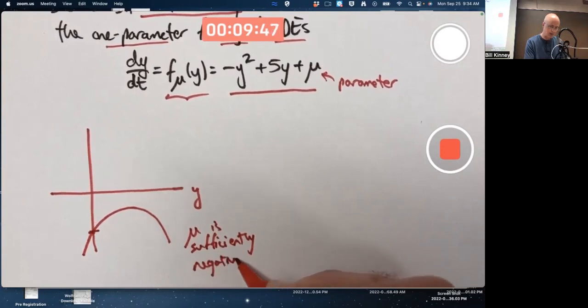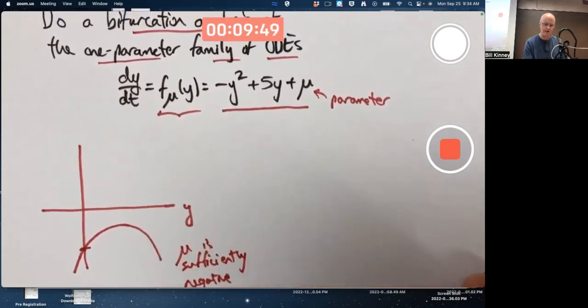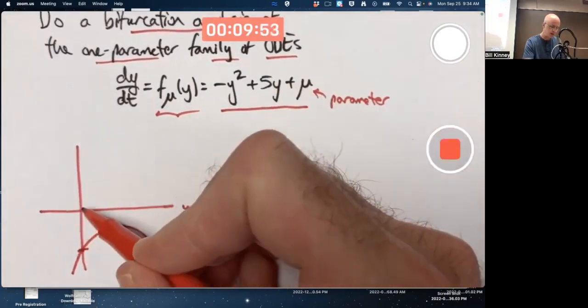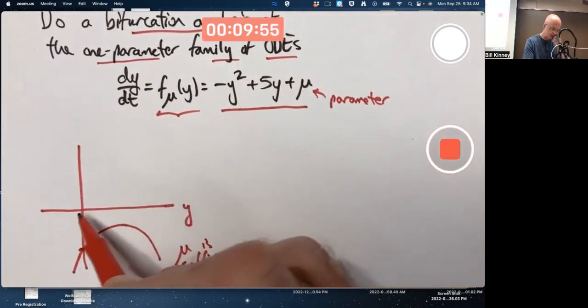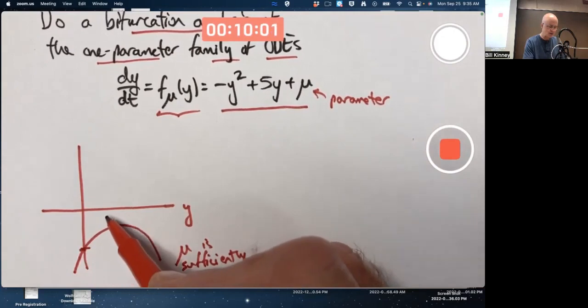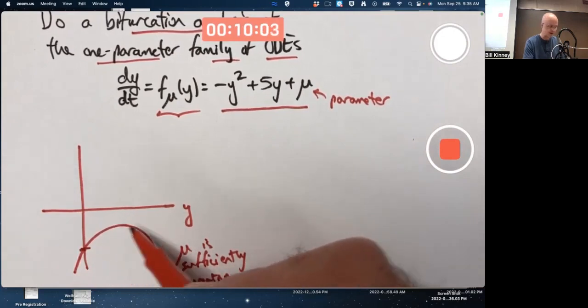How about if mu is 0? What would the graph look like if mu were 0? If mu were 0, it would be a graph that would be up here. Your horizontal intercept here would be at y equals 0. You go through the origin.